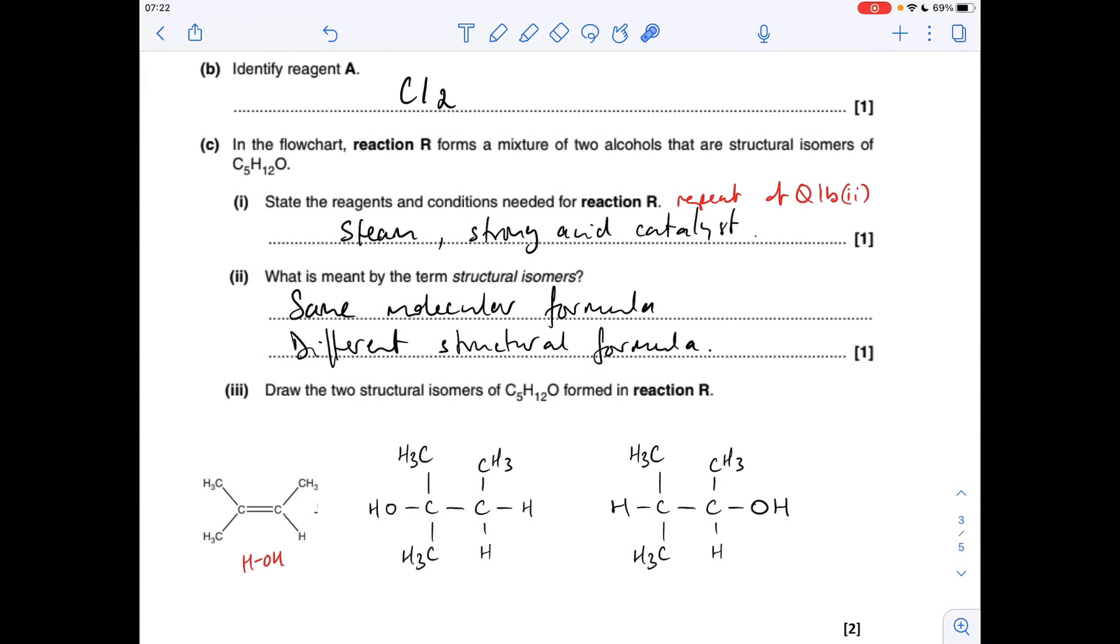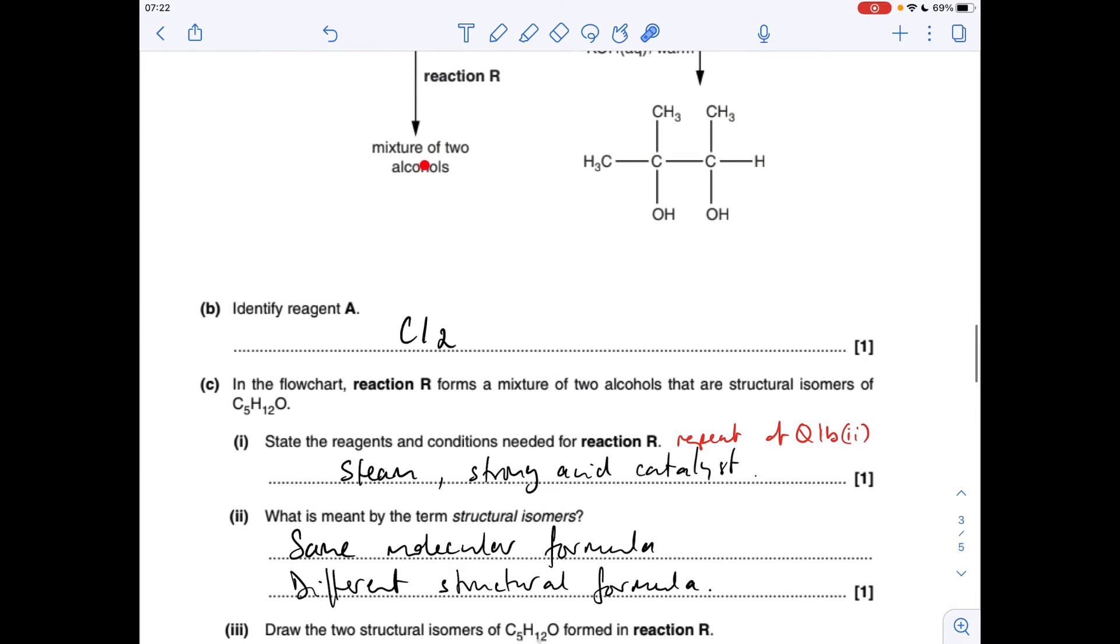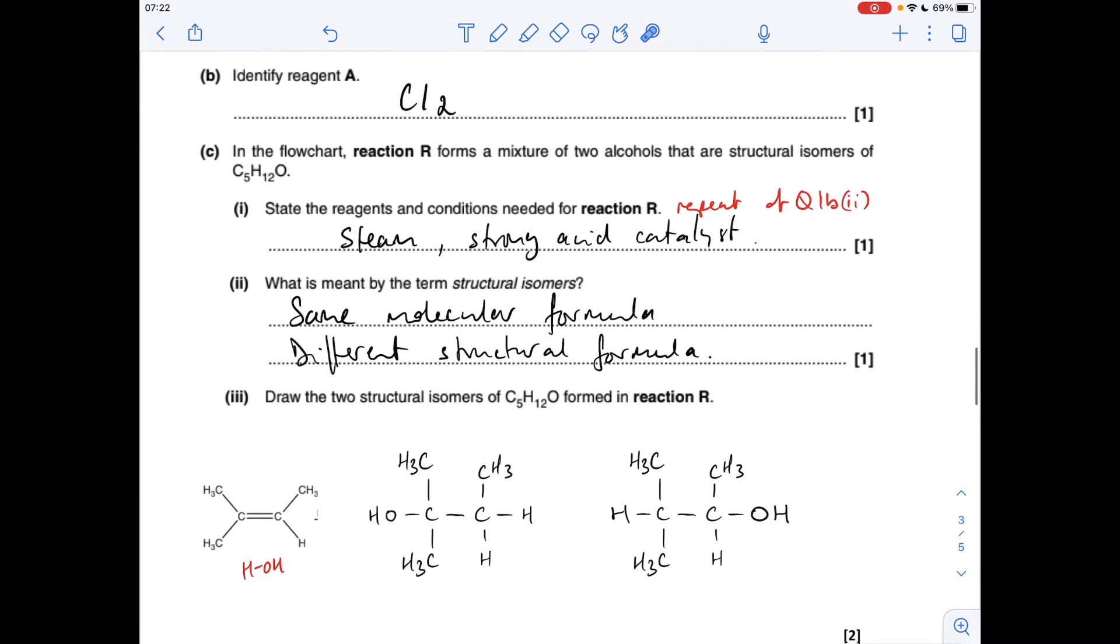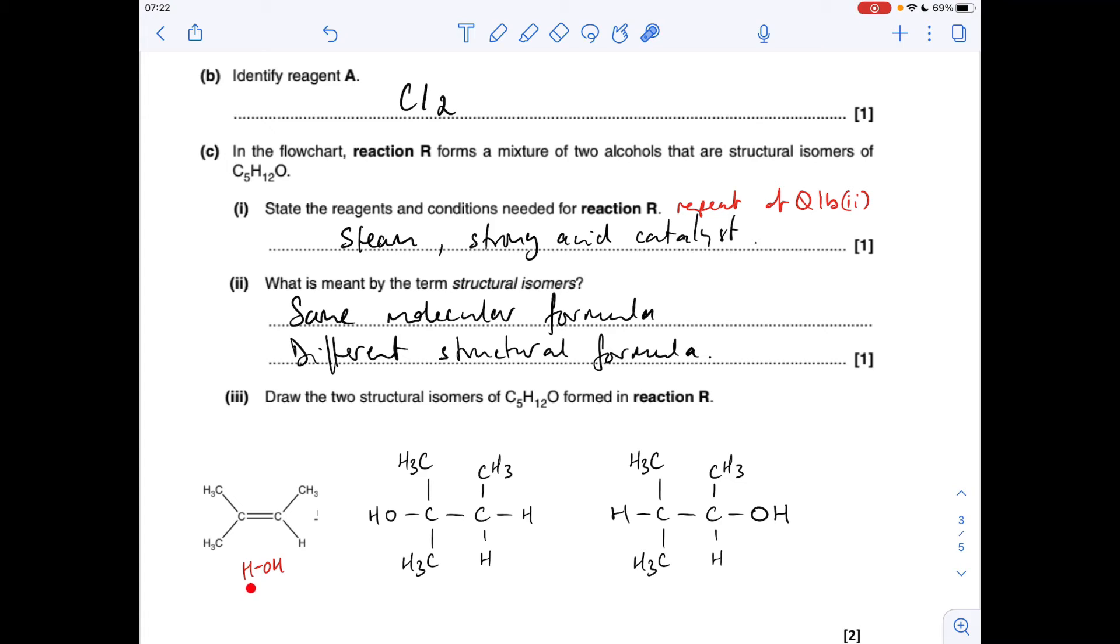Next part of the question. Draw the two structural isomers of C5H12O that are formed in reaction R. Remember it says these are both alcohols. So there's the original alkene. There's my H2O, but I'm thinking of it as HOH. So I could put the OH there and the H there, and that would give us that isomer. Or I could put the H there and the OH there, and that would give us that structural isomer.